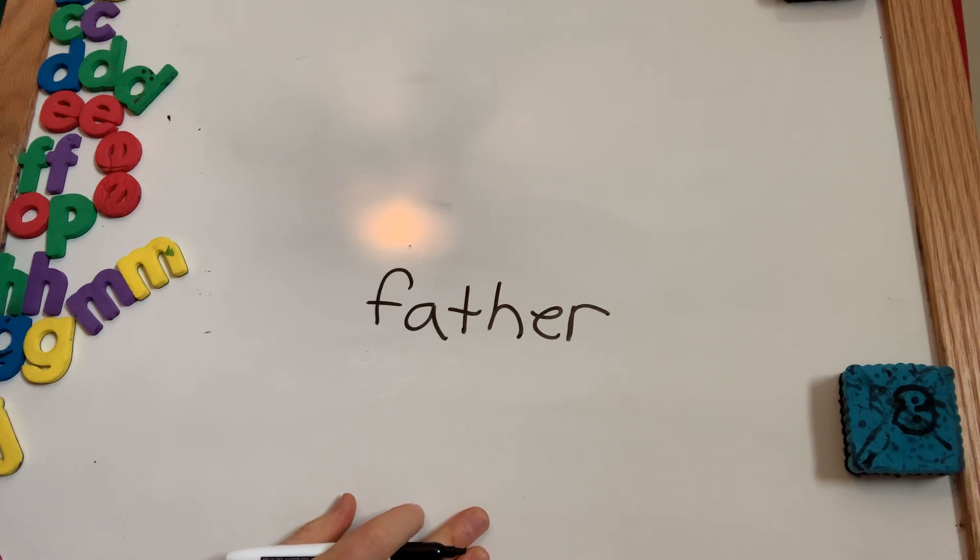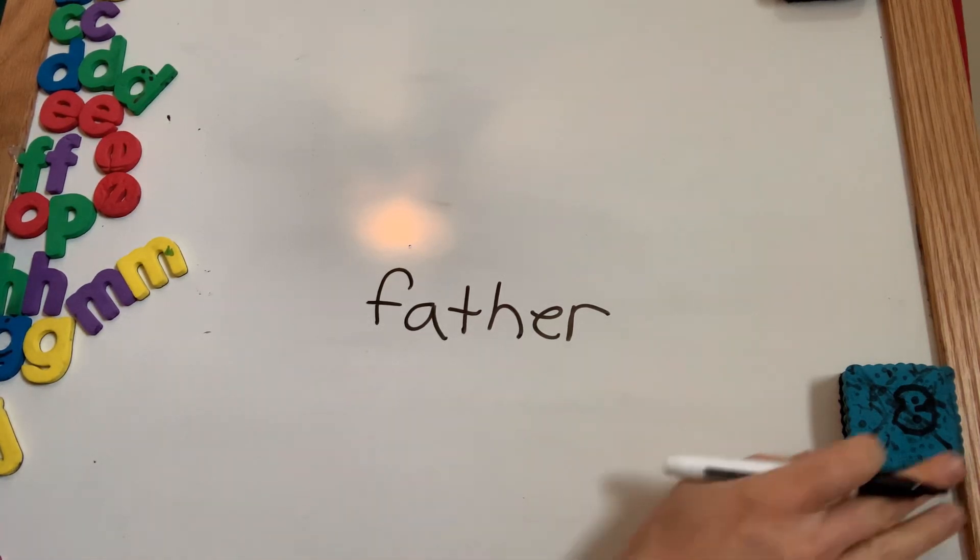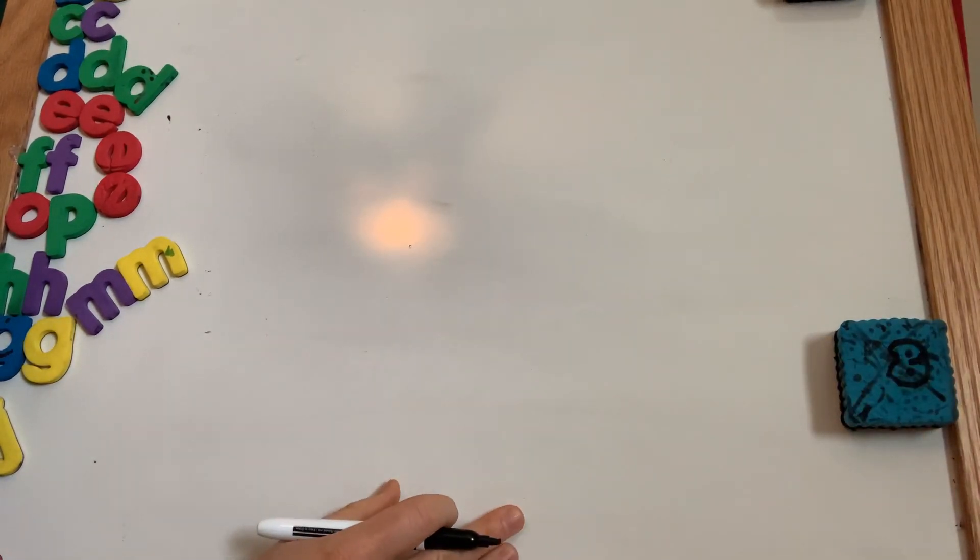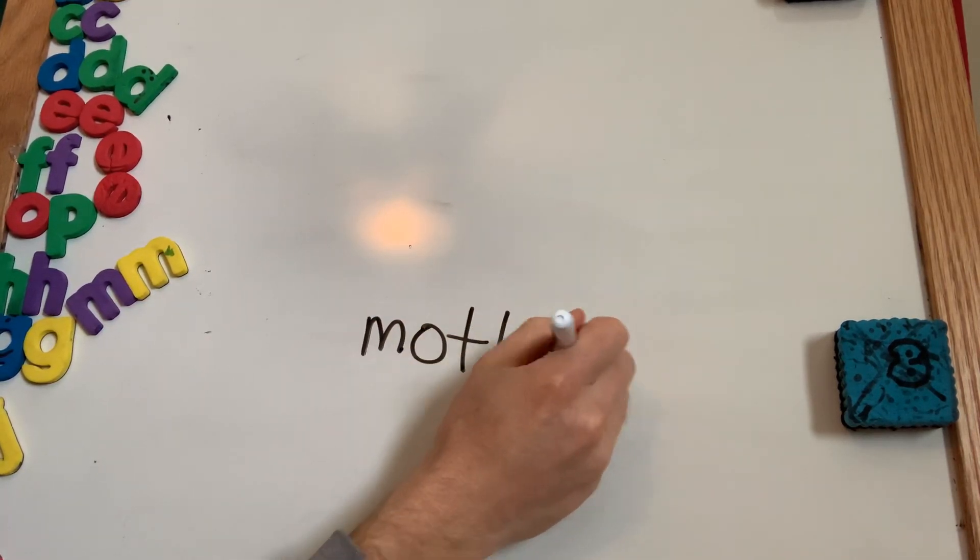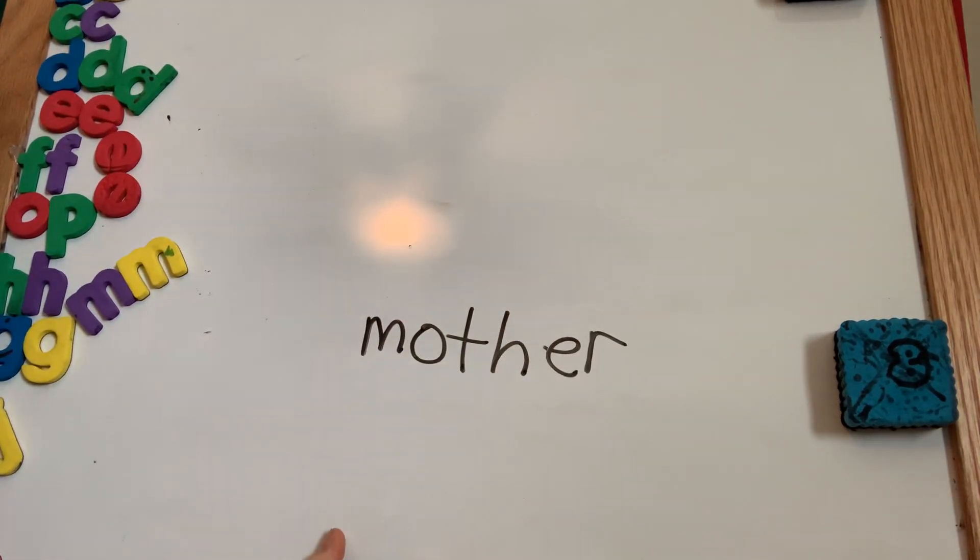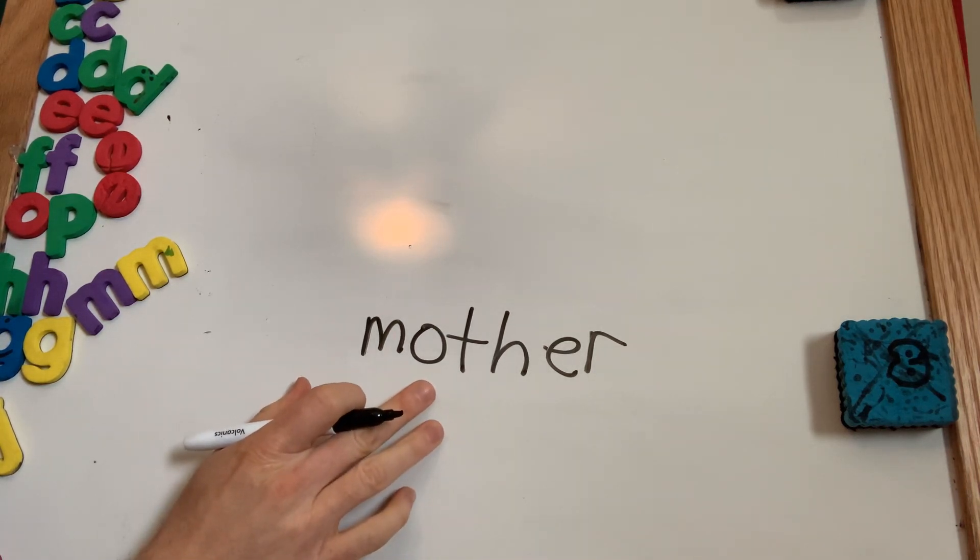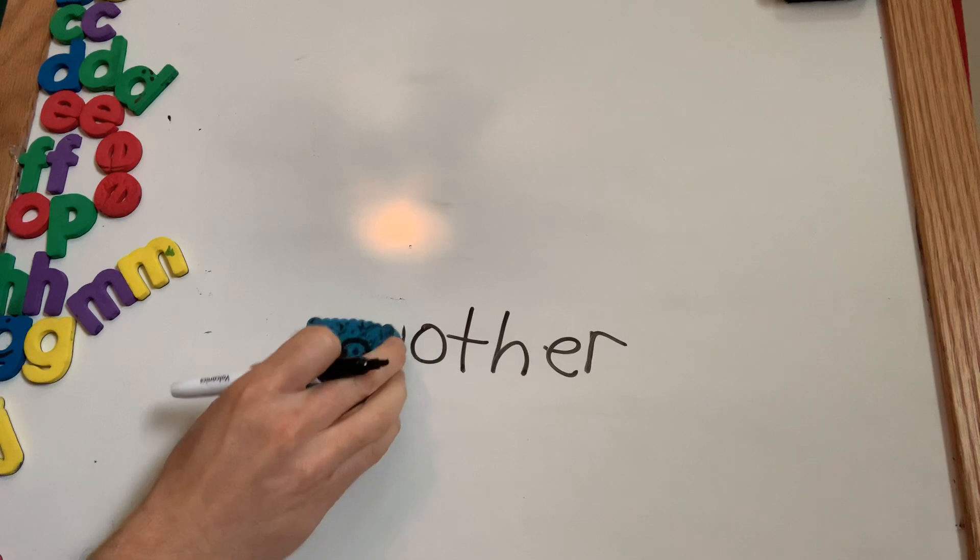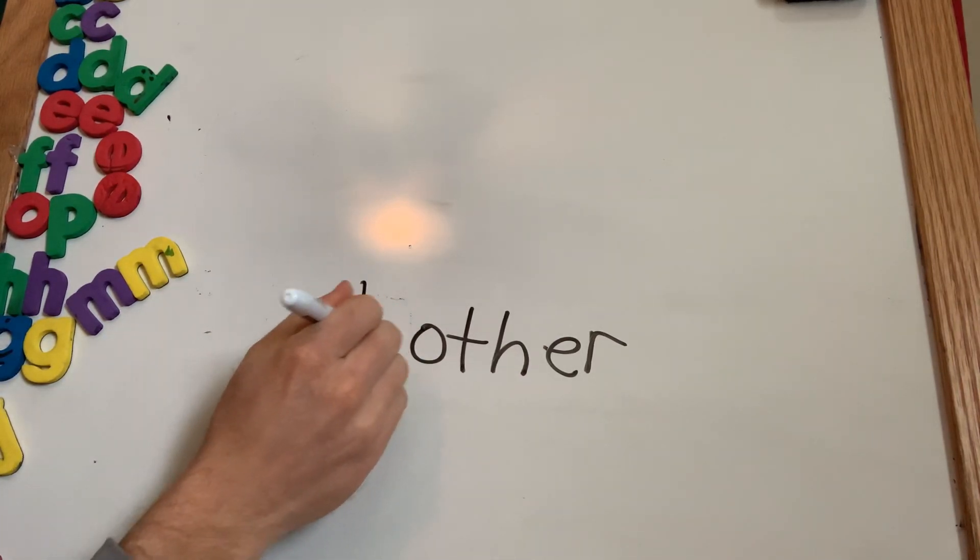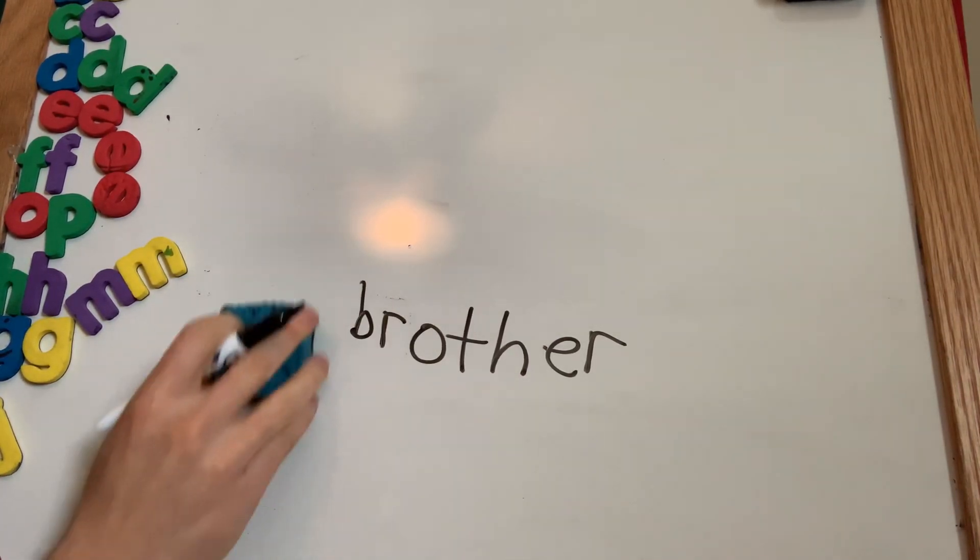Were you right? If not, just go ahead and rewrite it and make it correct. Mother. Pause it and try. Were you right? What's the tricky part of this word? That O kind of makes a short U sound. But it's an O. And if I want to change this to brother, what would I change it to? Just change that beginning. Mother, brother. They look the same.